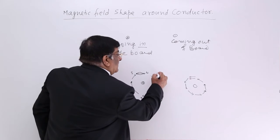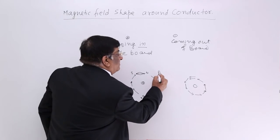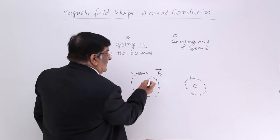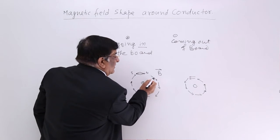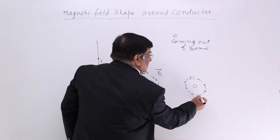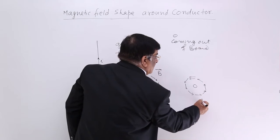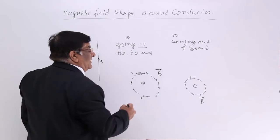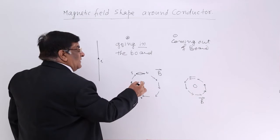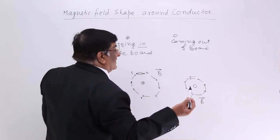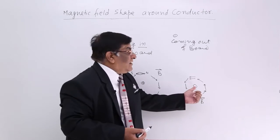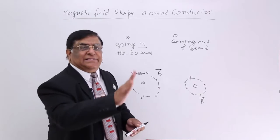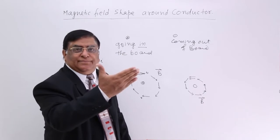Magnetic field will be shown by the letter B, and it is a vector quantity. At any particular point, it has a direction. So here B is anticlockwise, and here B is clockwise — when the current is going in and when the current is coming out. How do we remember it? It is very easy — by the right-hand curl rule.